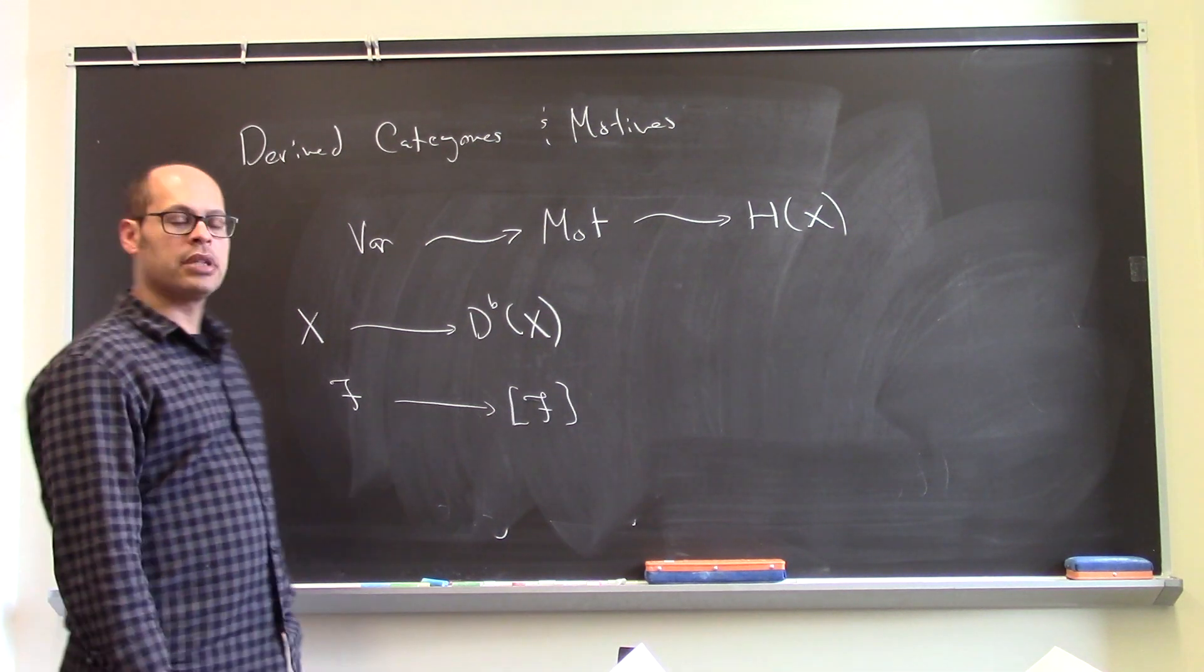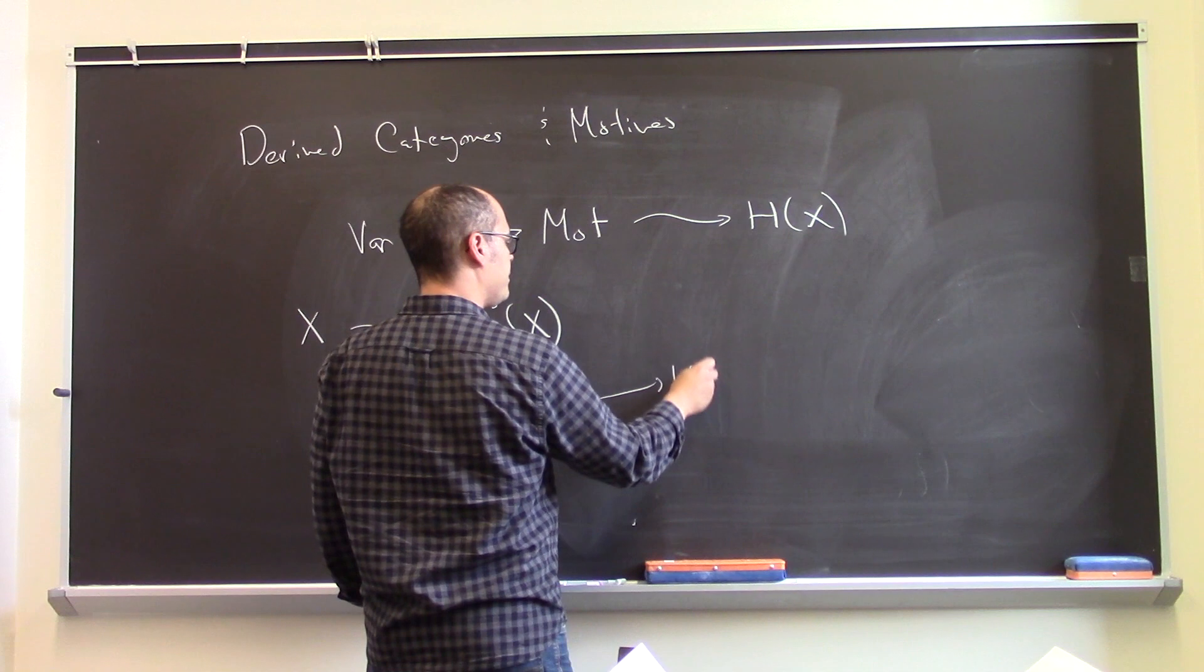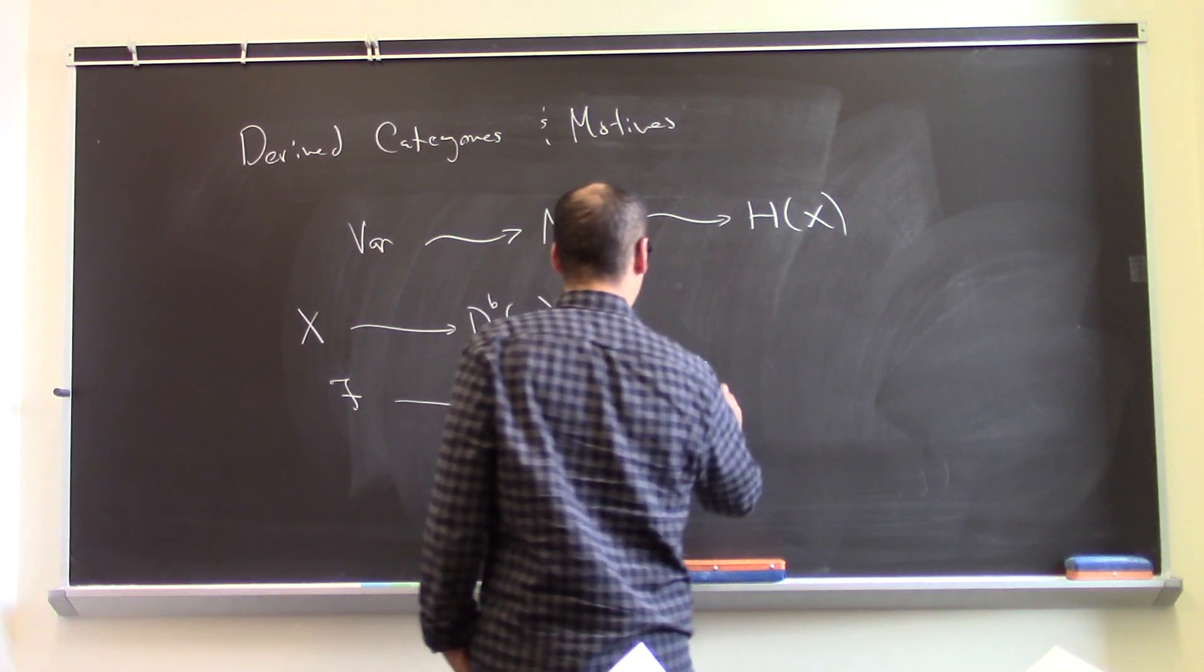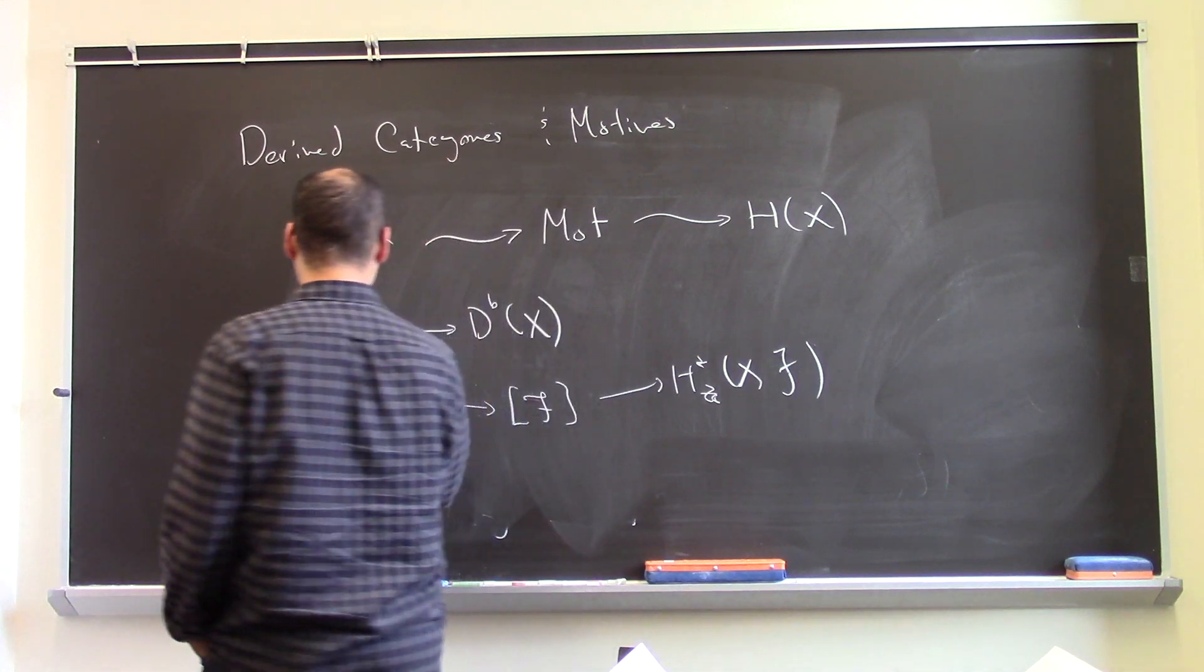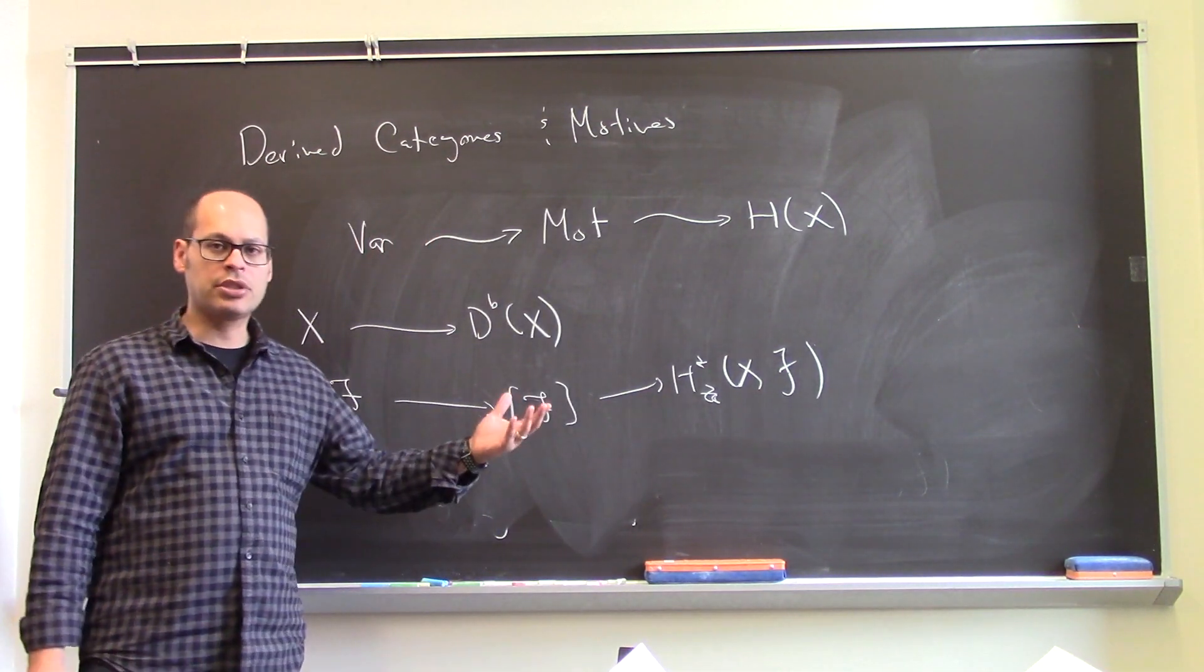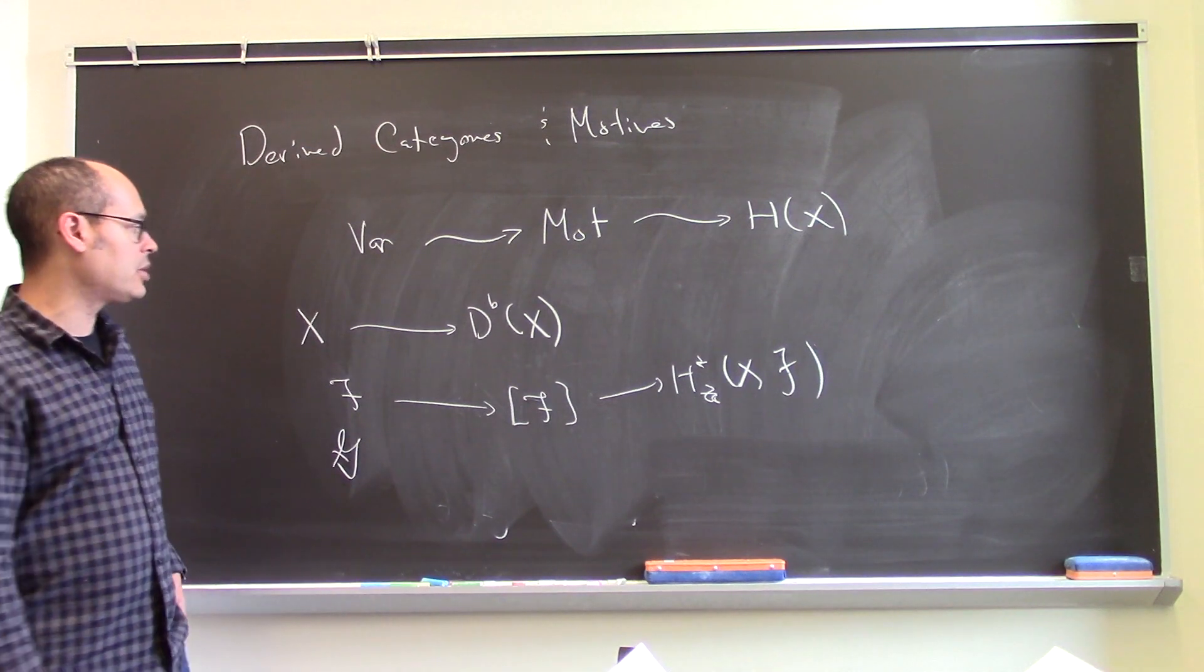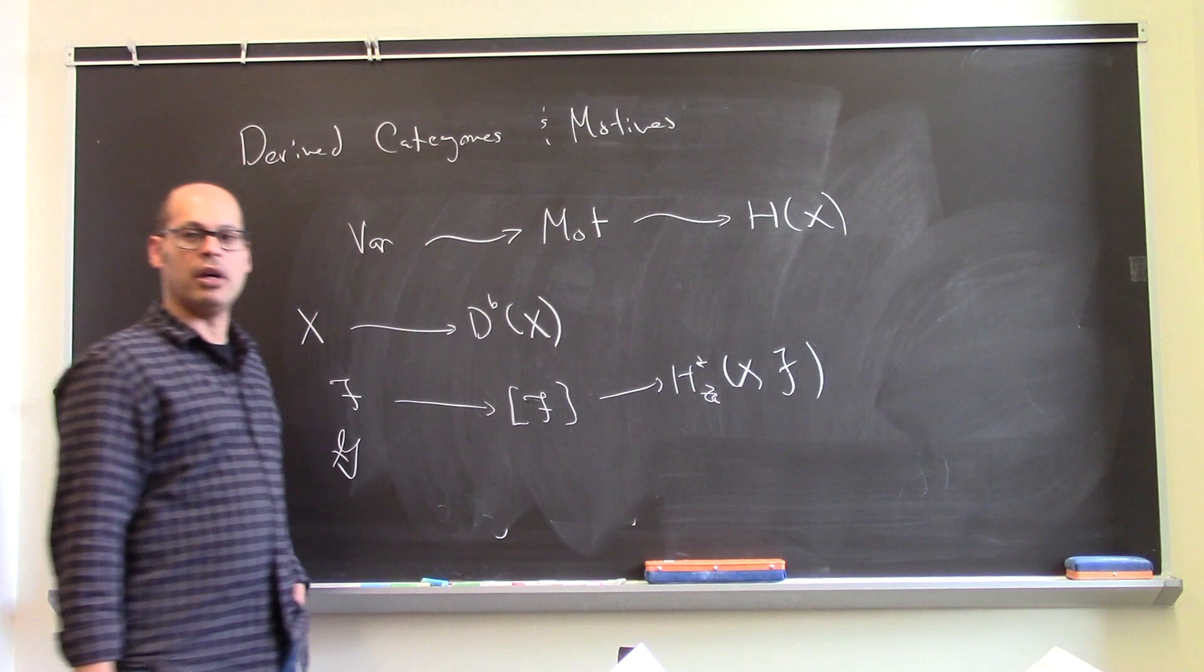And things like the sheaf cohomology, for example, or if you have pairs of coherent sheaves, you can look at Ext or Tor groups between them. And these only depend on the object in the middle of the derived category.